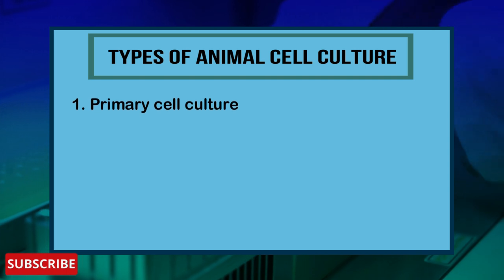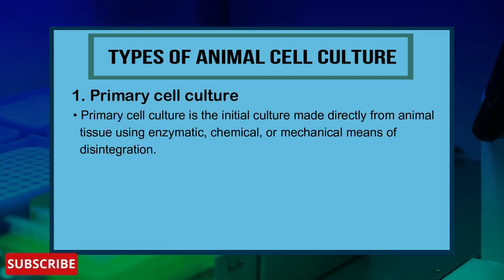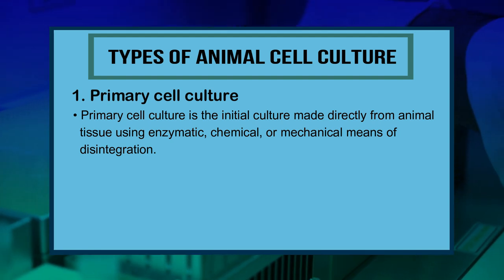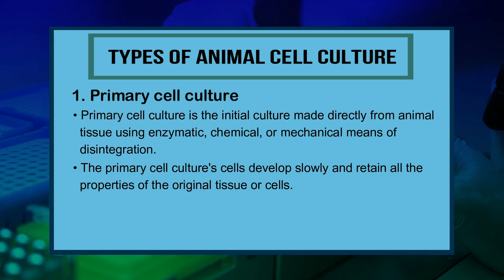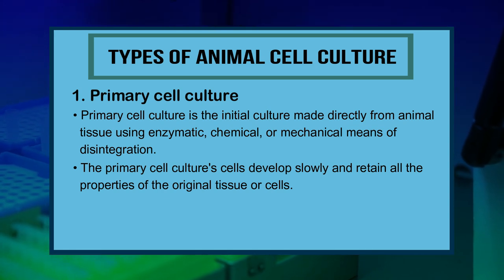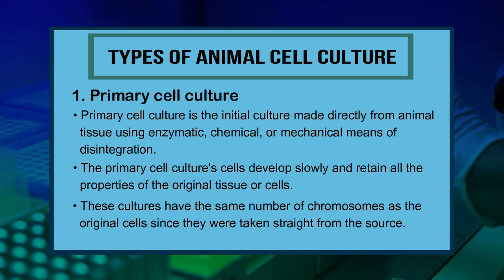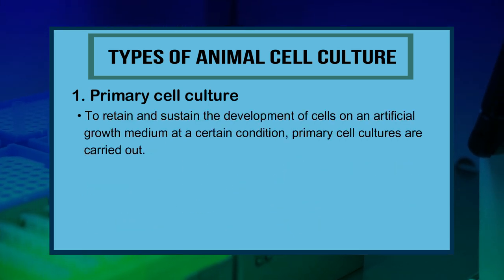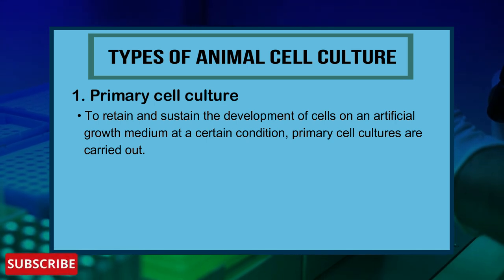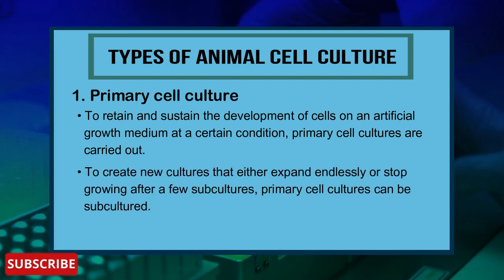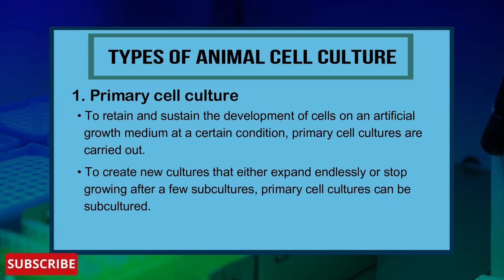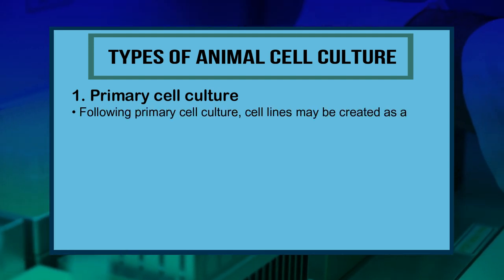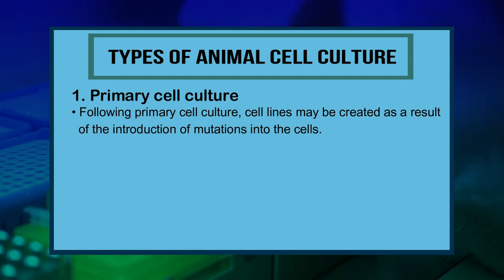Primary cell culture is the initial culture made directly from animal tissue using enzymatic, chemical, or mechanical means of disintegration. These cells develop slowly and retain all the properties of the original tissue. They have the same number of chromosomes as the original cells. Primary cell cultures are carried out to retain and sustain cell development on artificial growth medium, and they can be subcultivated to create new cultures that either expand endlessly or stop growing after a few subcultures.